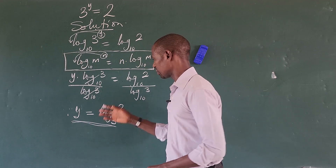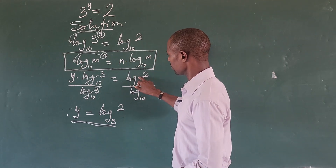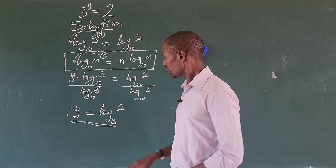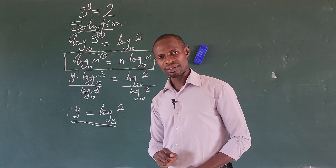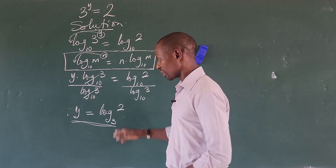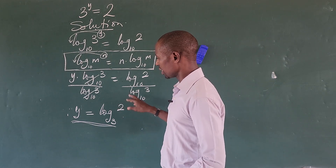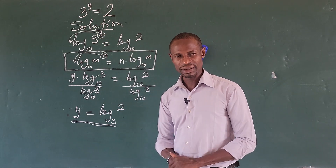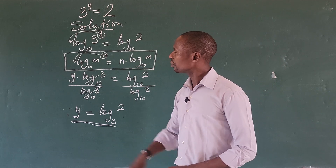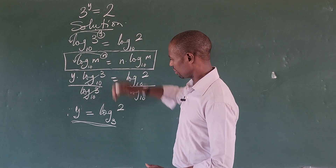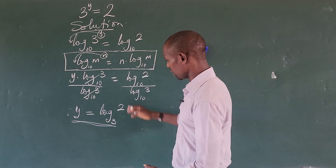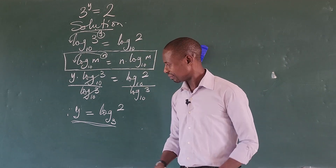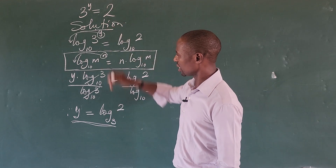To get the numerical value, all you need to do is find the value of log 2, then divide it by the value of log 3. When you plug into this expression it's going to give you the approximate value. This is the answer we got, and now if this answer should satisfy the original equation, let's do a simple check.